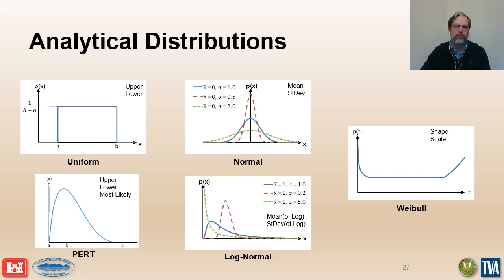The Weibull distribution is commonly used for time-dependent reliability analysis. Failures during the early warranty period can be modeled with a shape parameter less than 1. Random failures during the service life can be modeled with a shape parameter equal to 1. Age-related wearout failures at the end of the service life can be modeled with a shape parameter greater than 1. A key concept is to select a distribution consistent with the physical characteristics of what you are modeling and also consistent with the available data.